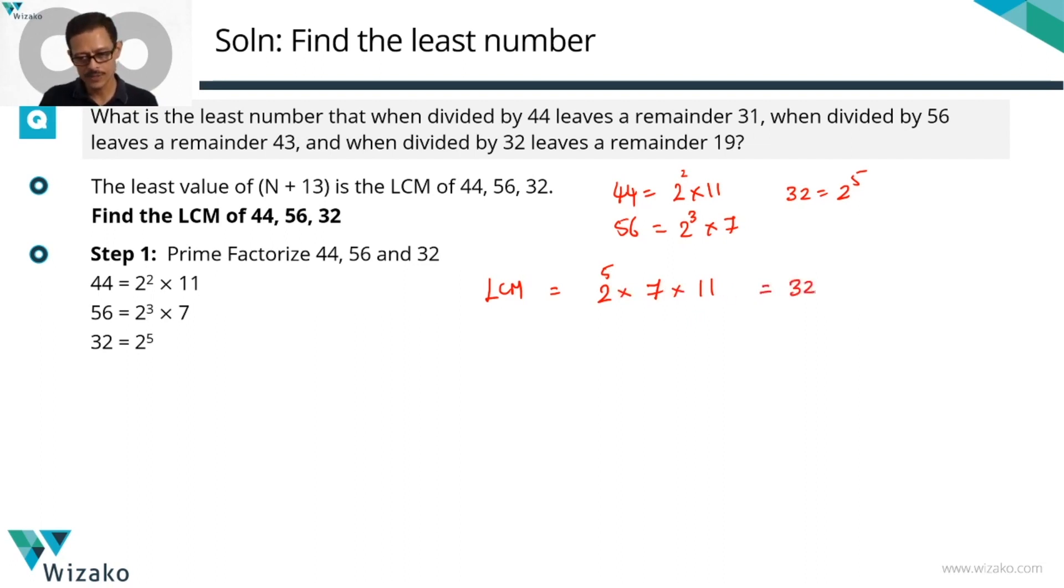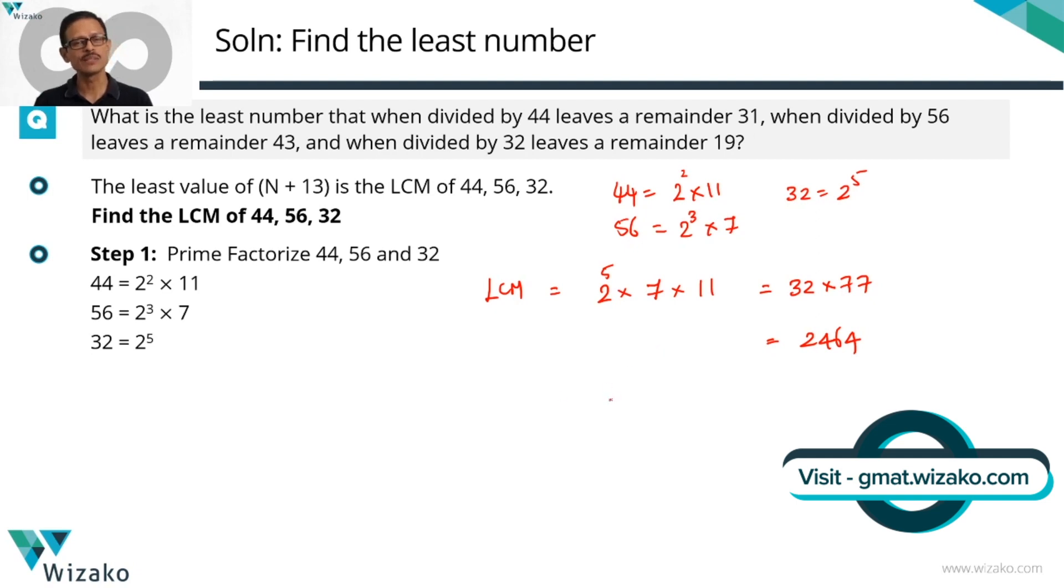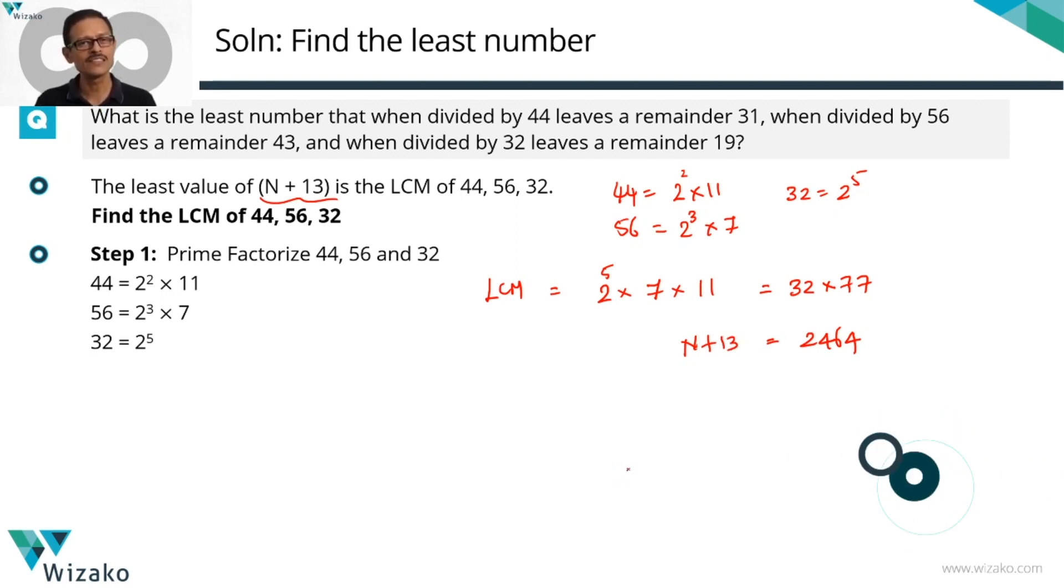2 to the power 5 is a 32. 7 times 11 is a 77. 32 times 77. 77 into 30 is a 2310. 2 times 77 is a 154. This will work out to 2464. So the LCM of these three numbers is 2464. What did we say the LCM was in this context? N plus 13 is the LCM of these three numbers. So N plus 13 equals 2464. N plus 13's smallest value is 2464. We need to find out the least value of N. So subtract 13 from this. So that's going to be equal to 2451.